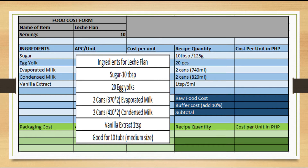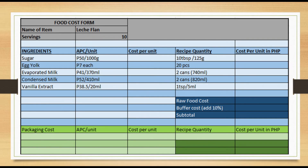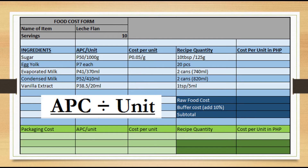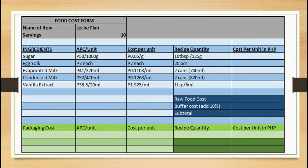Next, we fill out the ingredients column and the recipe quantity. After that, doon tayo sa APC per unit or as-purchase cost per unit. Paano mo siya binili? Kunyari, pumunta ka ng SM, bumili ka ng sugar na 1 kilo for 50 pesos. So lalagay mo 50 pesos for 1,000 grams. Next, we have to find the cost per unit — alamin natin yung magkano ang bawat gram or bawat ml. So simple lang: yung APC, divide mo sa unit. So 50 divided by 1,000 = 0.05. For the eggs, that's 7 pesos each. For evaporated milk, 41 divided by 370 = 0.1108. Condensed milk: 0.1268. And for vanilla extract: 1.925 per ml.